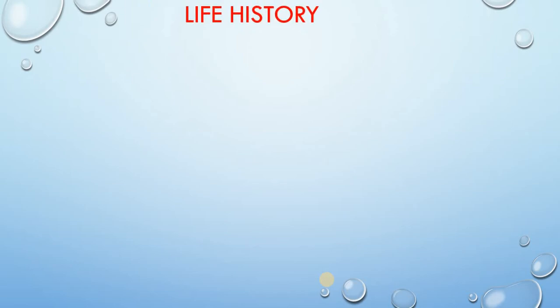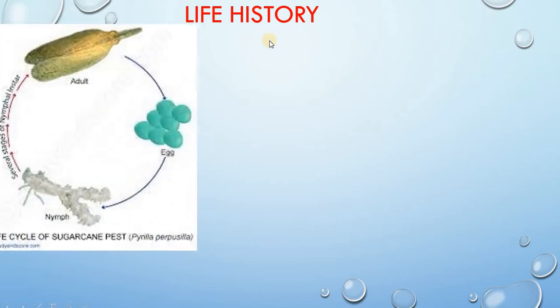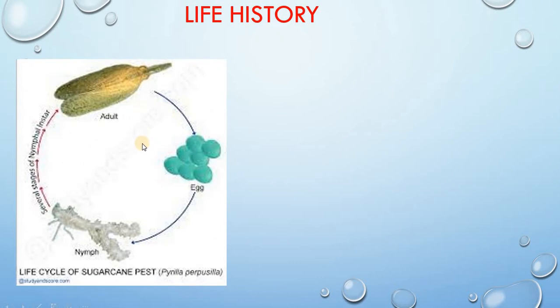Both adults and nymphs are very active and suck sap from the leaves of sugarcane. At the slightest disturbance, they jump from one leaf to another. Regarding the life history of Pyrella patusilla, this is the diagrammatic representation showing the life history: adult, egg, nymph, and several stages of nymphal instar. There are five stages of nymphal instars.